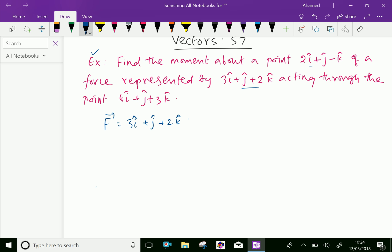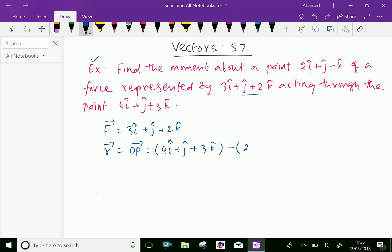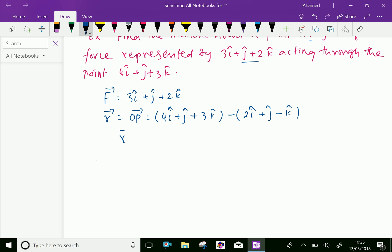Therefore, now the vector R is given as vector OP to the point 4i plus j plus 3k minus the initial vector 2i plus j minus k, which equals 4i minus 2i is 2i, j minus j is 0, therefore 0j, and 3k minus negative k is plus 4k.